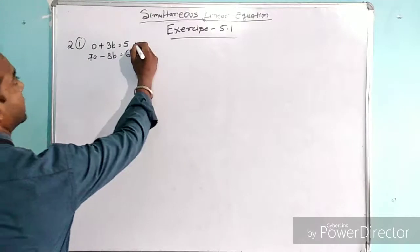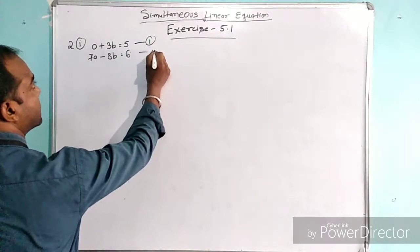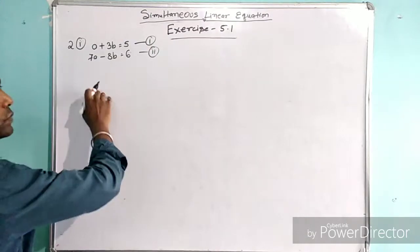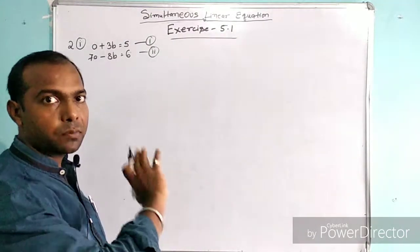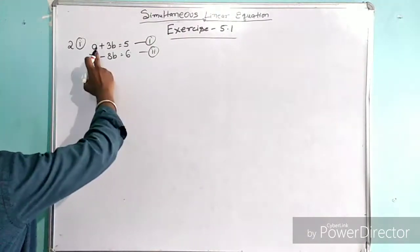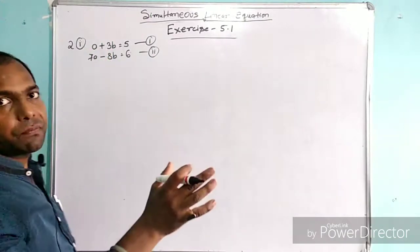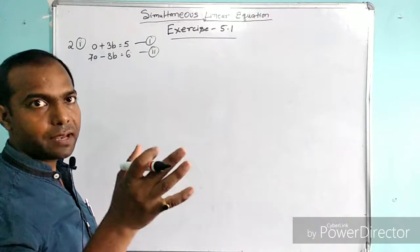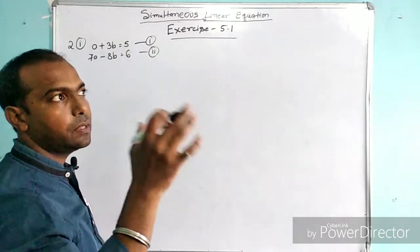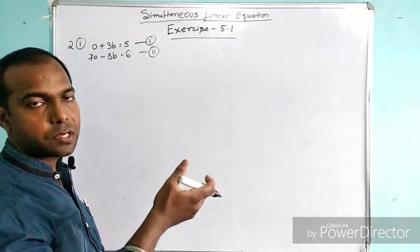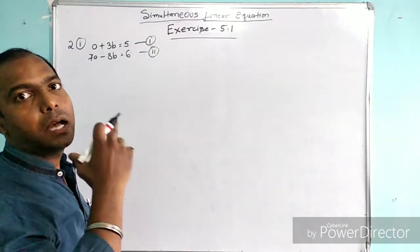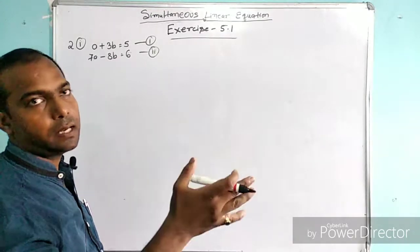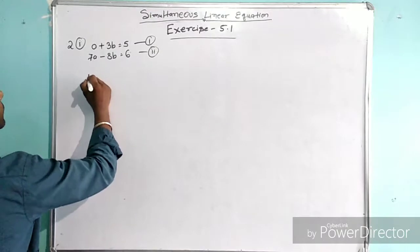We will consider the first as equation number 1 and the second as equation number 2. What we have to do is find a temporary value of one of the variables. We have two variables, a and b, so first we will find the temporary value of a, substitute it into one of the equations to find the actual value of b, and then find the actual value of a.